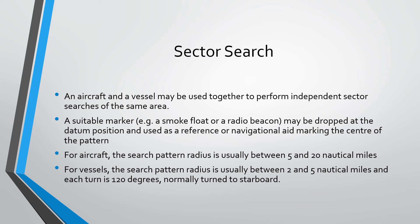For aircraft, the search pattern radius is usually between 5 and 20 nautical miles. For vessels or ships, the search pattern radius is smaller — usually between 2 and 5 nautical miles. Each turn of the search pattern is about 120 degrees, so three turns of 120 degrees covers the full 360-degree circle. The turns are normally made to starboard, and each time a vessel completes a sector of 120 degrees, three such turns pretty much cover the full 360-degree circular search area.